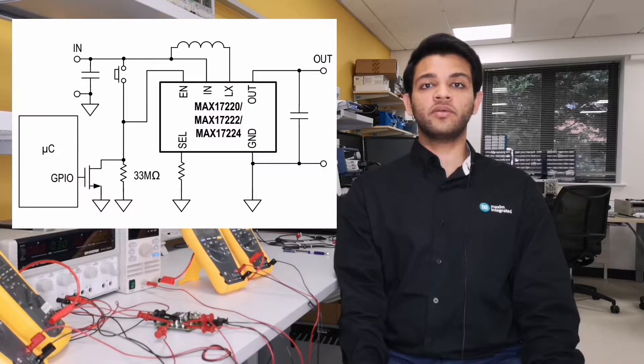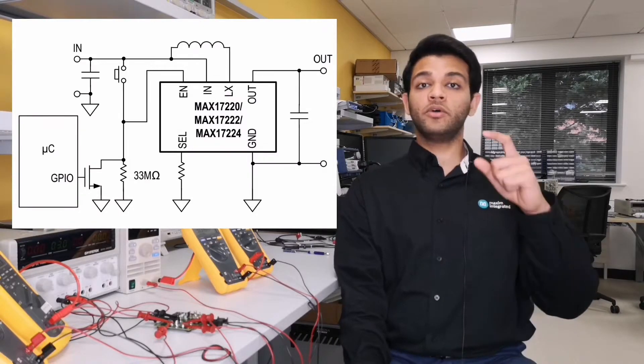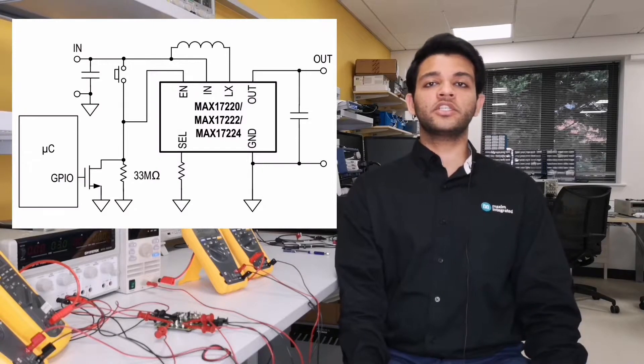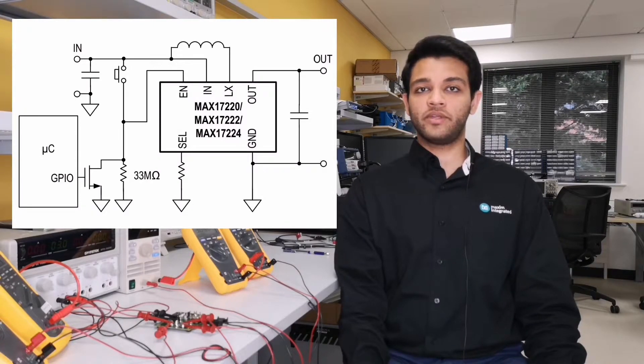Alternatively, the connection of the enable pin to a push-pull GPIO of a microcontroller using a push button as in this figure will result in a shutdown current of 0.5 nano amperes.